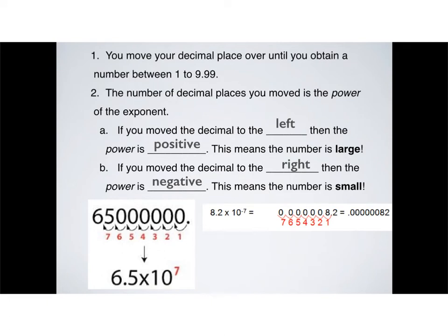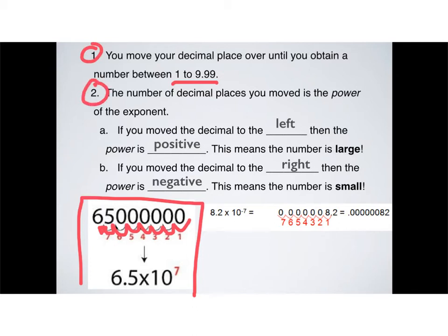So, take a look at this example here at the bottom. So, we have a large number again, and so I'm moving my decimal place over one, two, three, four, five, six, seven spots. Why seven spots? Well, when I move my decimal place over seven spots, I get 6.5. And 6.5 is a number between 1 to 9.9, just like step one says. After that, all I've got to do is count however many decimal places I moved, and that gives me the power. So, 6.5 times 10 to the 7. Now, how do I know it's to the 7 and not to the negative 7? It's because I was moving my decimal place over to the left.